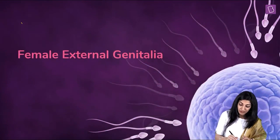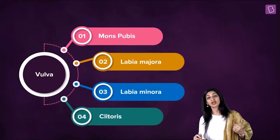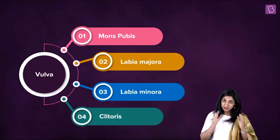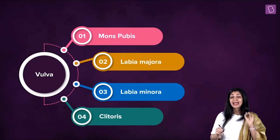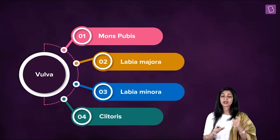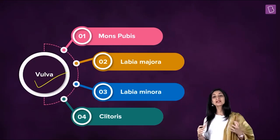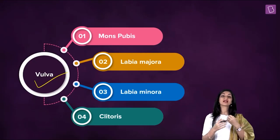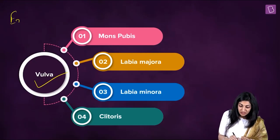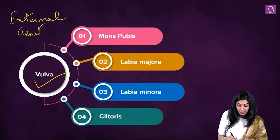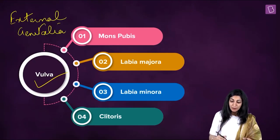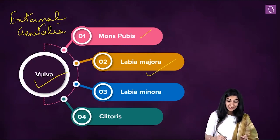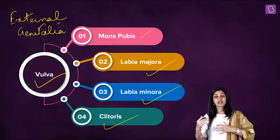We are going to be talking about female external genitalia. Children, the external genitalia in a female are collectively called the vulva. Vulva is not a single structure — it is composed of all these structures together. Some children think vulva is just a single structure, but no. The outside structures are called mons pubis, labia majora, labia minora, and clitoris. The word labia, as you know from class 11, means lips.